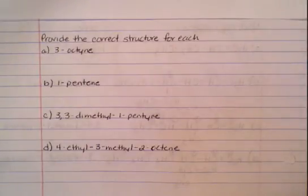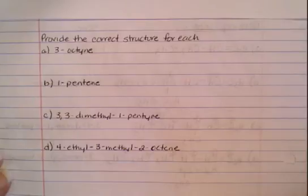Often you will find alkenes and alkynes combined into individual problems. So the first one that we want to look at is how to draw the structure for 3-octyne.